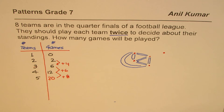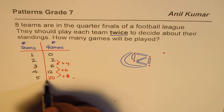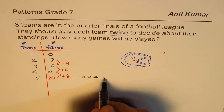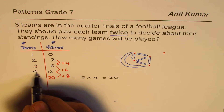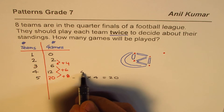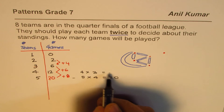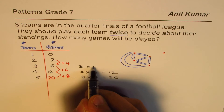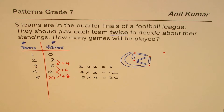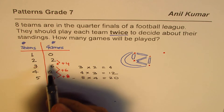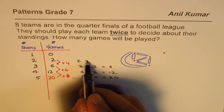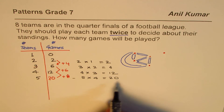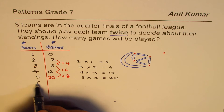The pattern is: we get the number of games by multiplying the number of teams by one less. Five times four is twenty, four times three is twelve, three times two is six, two times one is two. So we do see a clear pattern here.